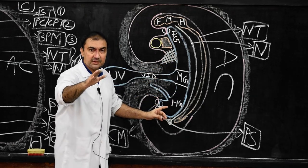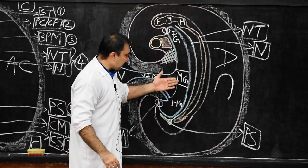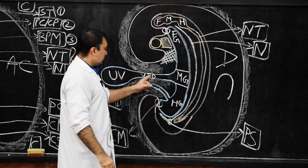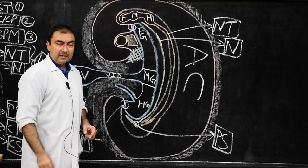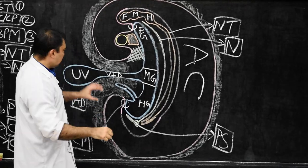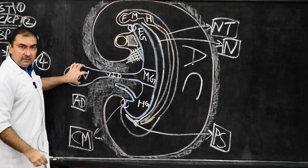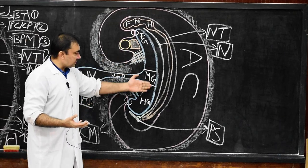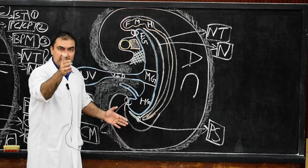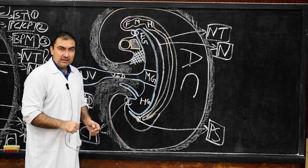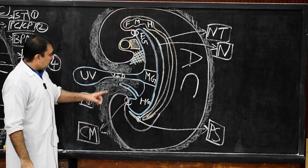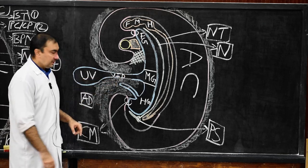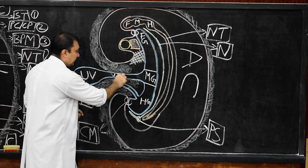The primitive gut tube divides into foregut, midgut, and hindgut — the entire gut tube is developed from the yolk sac. The connecting portion between the umbilical vesicle, which is the remnant of the yolk sac, and the primitive gut tube is known as the vitelointestinal duct.